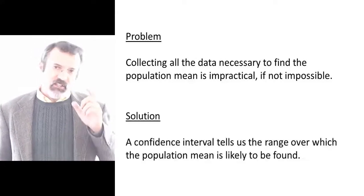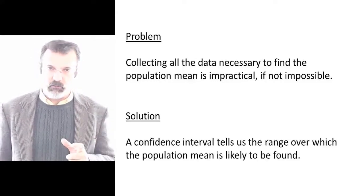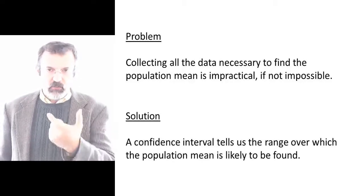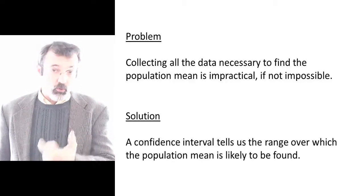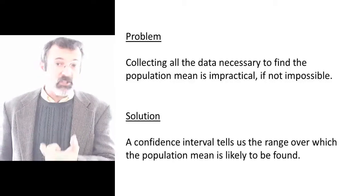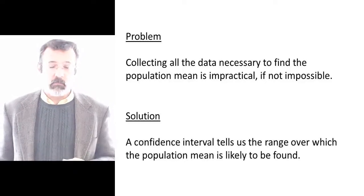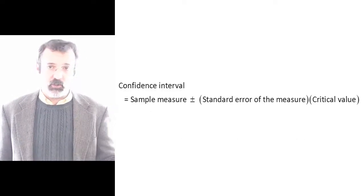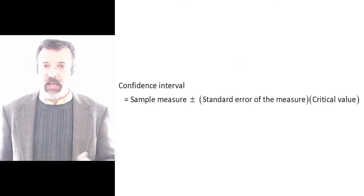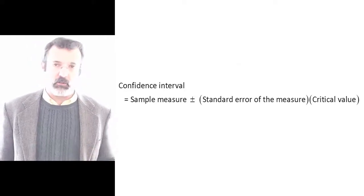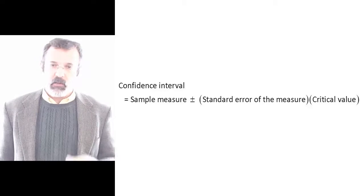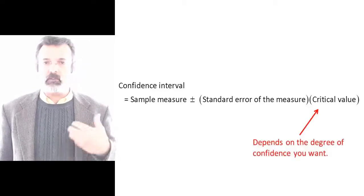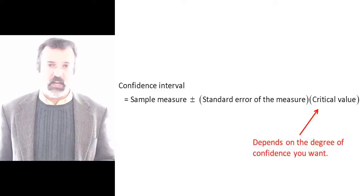The solution is instead to construct a confidence interval. A confidence interval tells us a range of numbers over which the true population average is likely to be found. To calculate a confidence interval, we begin with a sample measure, then add and subtract from that the standard error of the measure multiplied by a critical value. The critical value reflects the degree of confidence that you're looking to attain.